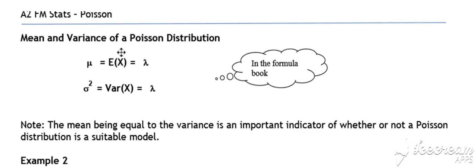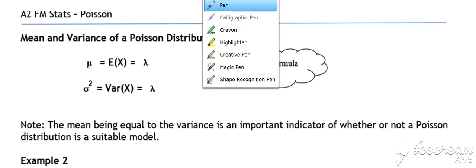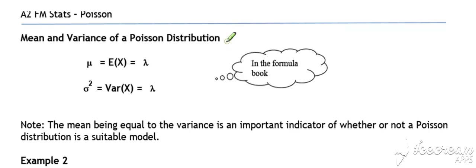In the second part of this lesson, we're looking at the mean and variance of a Poisson distribution. The mean expected value of x, as you would expect for a Poisson, is equal to lambda.